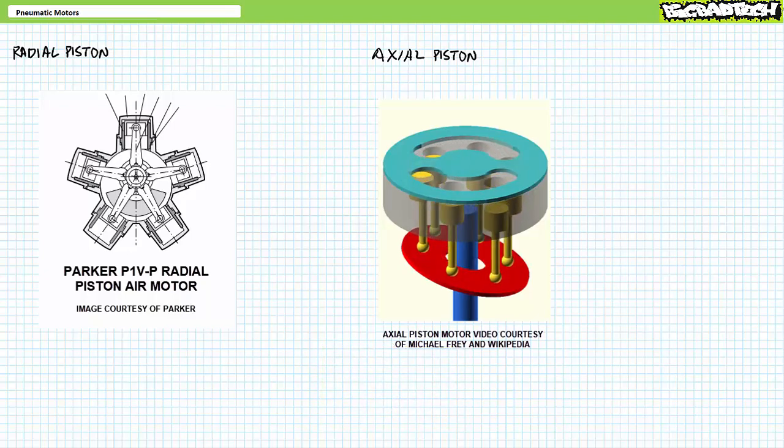As with vane-style air motors, one reverses the rotational direction of a piston-style air motor, either radial or axial, by changing direction of fluid flow. Piston-style air motors are known for their higher torque ratings in comparison to other pneumatic air motors.